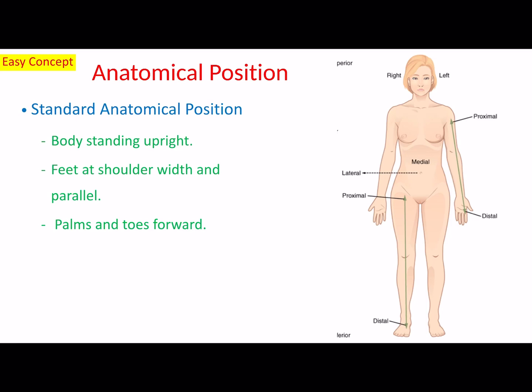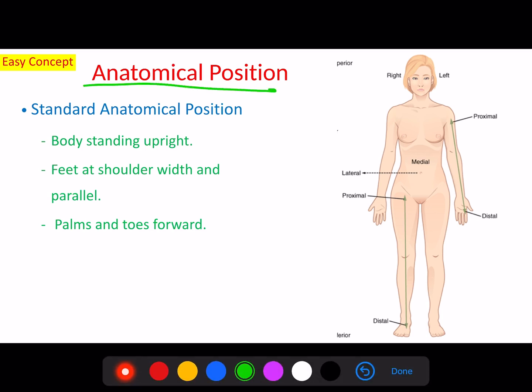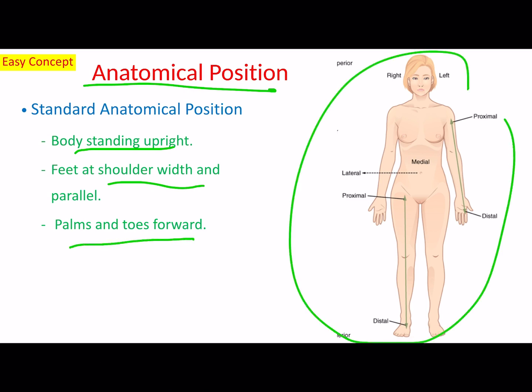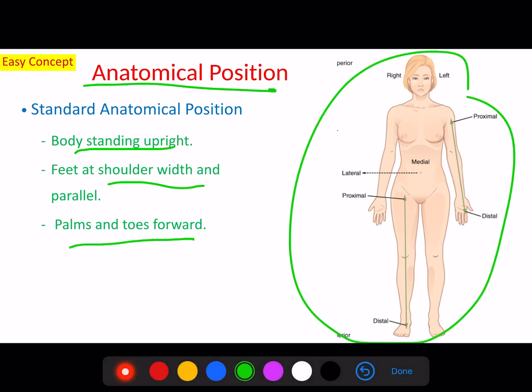In this video of this chapter we will learn some anatomical terms that we are going to use. The first thing we need to understand is the anatomical position. Anatomical position is when the body is standing upright, feet at shoulder width, parallel, and palms and toes facing forward. This is the anatomical position.